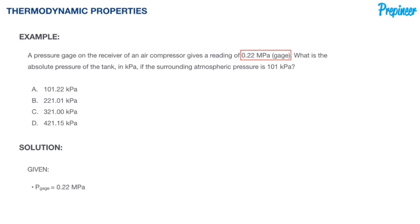We're told that the pressure reading is gauge pressure: P_gauge equals 0.22 MPa. We're also given atmospheric pressure at 101 kPa.